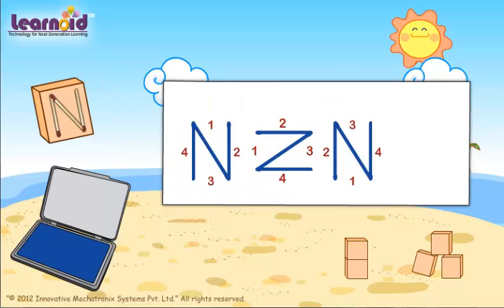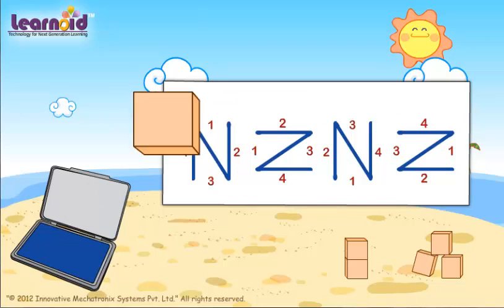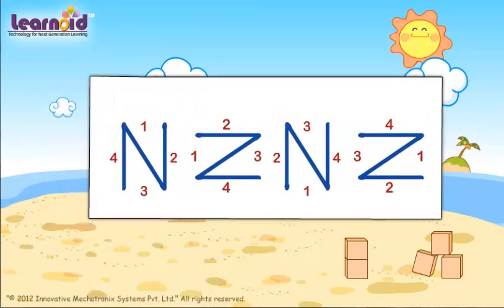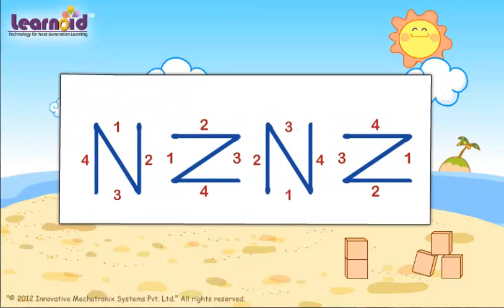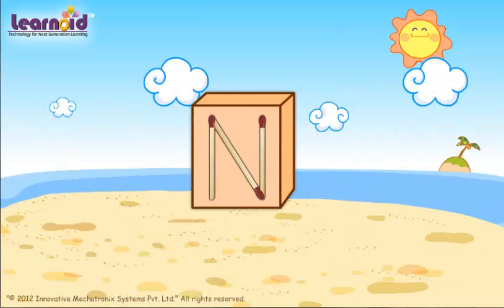They rotated once more to get side four on top. Rohan rotated the block one side at a time. There are four sides of the printing block.